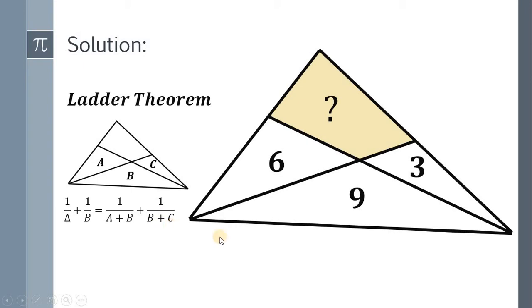Now, using this theorem to our problem, first thing to do is to replace this part with x. Take note that this 9 is the area of the bottom triangle, this 6 is the area of the triangle on the left side, and this 3 is the area of the triangle on the right side. Applying Ladder Theorem...